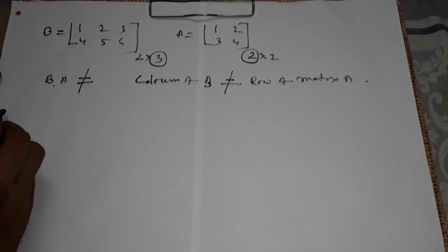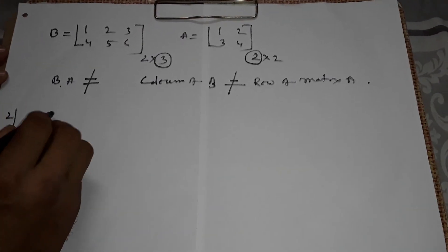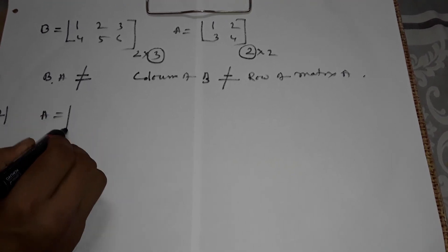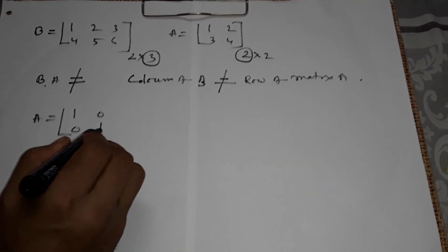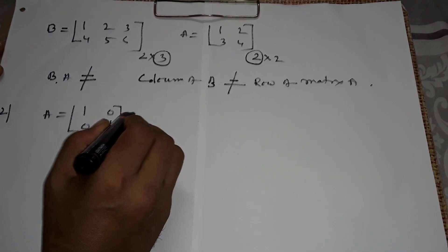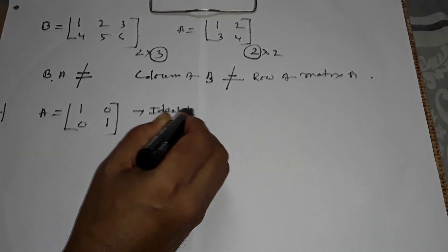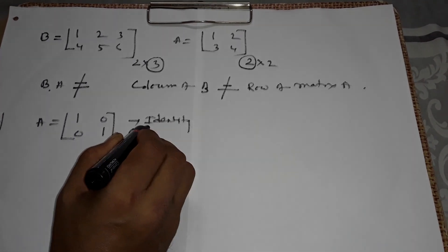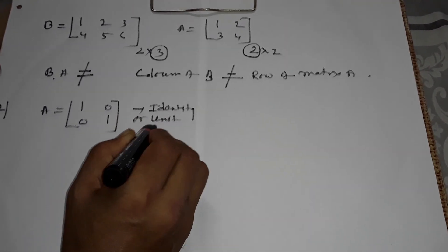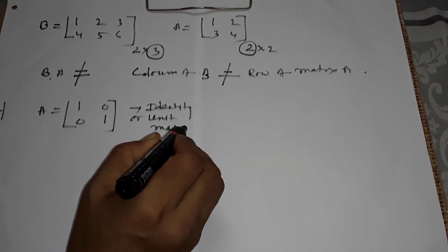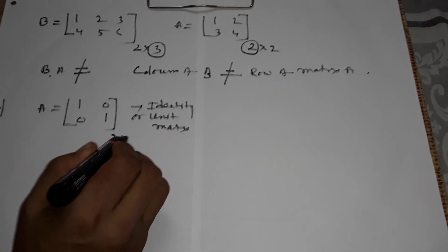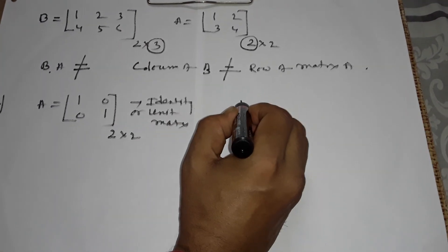Now I am giving another example. A equals 1, 0, 0, 1. It is identity matrix, identity or unit matrix. Its order is 2 into 2.